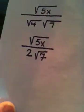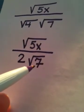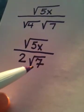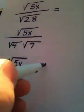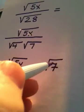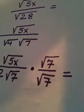Okay, look what's happening now. I can't leave a radical in the denominator. It's not considered to be in simplest form. So I'm going to rationalize the denominator by multiplying top and bottom by the square root of 7.